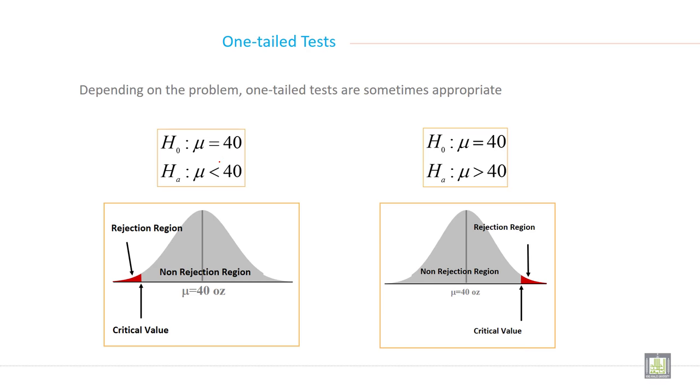See here, it is less than and it is greater than. So for less than, the rejection region always lies on the left side, and for greater than, the rejection region always lies on the right side.